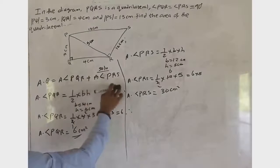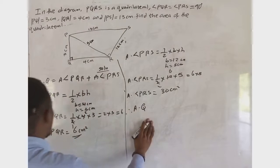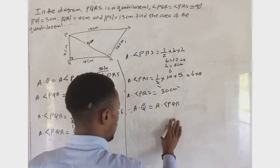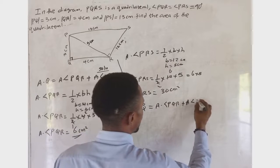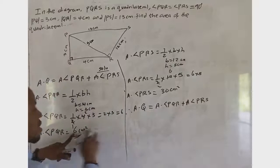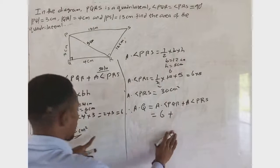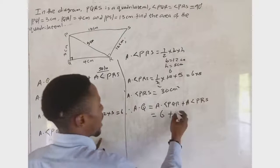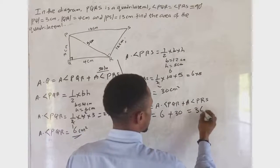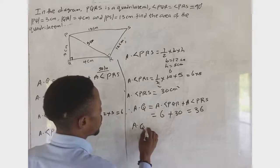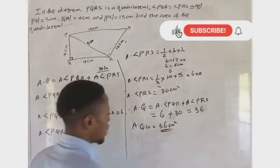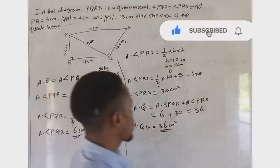Therefore, the area of the quadrilateral is equal to the sum of the two triangle areas: area of PQR + area of PRS = 6 + 30 = 36 cm². So the area of the quadrilateral PQRS is 36 centimeters squared. I hope you understand this question.